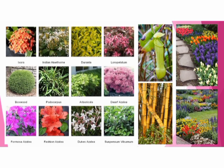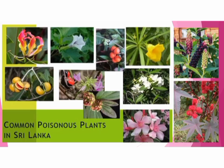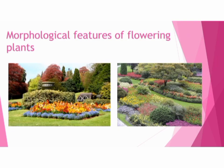Now here you can see some examples of different kinds of plants such as Ixora, Rofasalia, Fashanazalia, Bamboo, Bandura and Tivoli. And also now you can see some pictures of common poisonous plants in Sri Lanka such as Nyengala and Kinahiria.